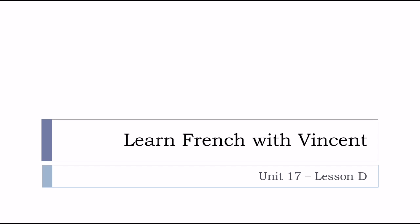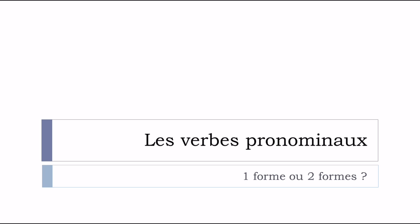Bonjour à tous and welcome to Learn French with Vincent. This is Unité 17 Leçon D. In this lesson we'll see together les verbes pronominaux and we'll try to see whether it's possible to have one form or two forms — une forme ou deux formes.